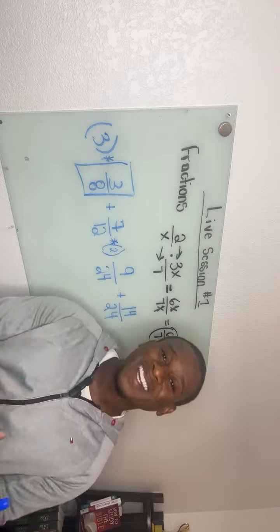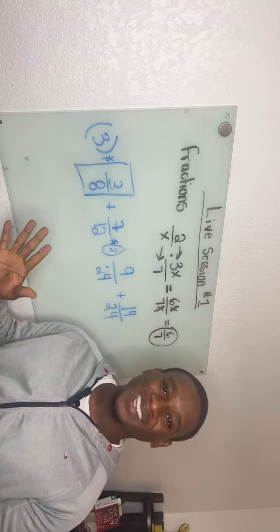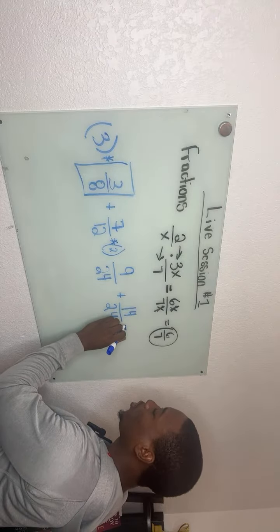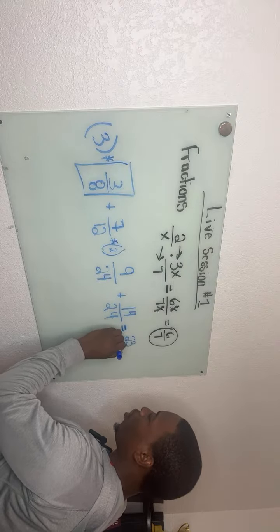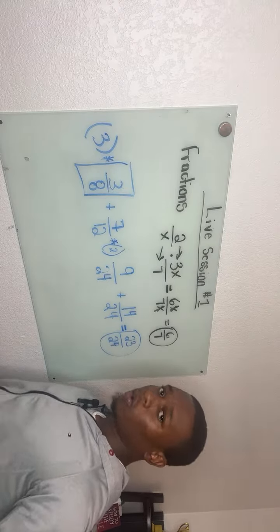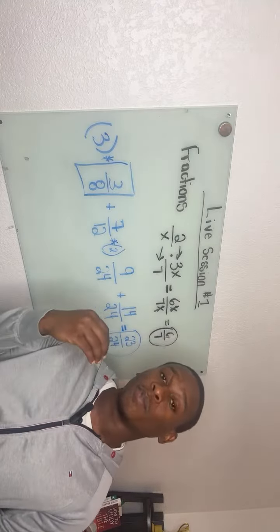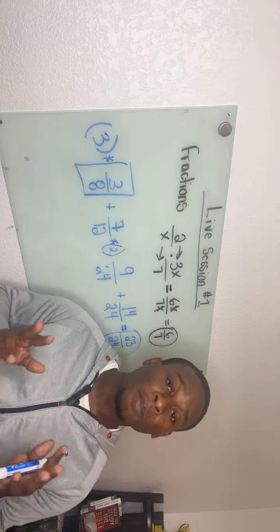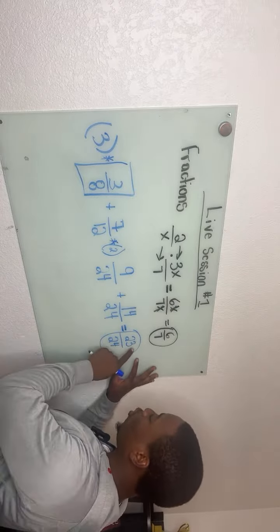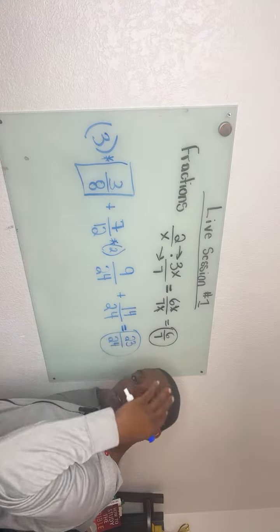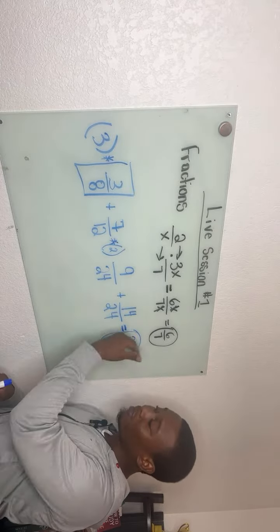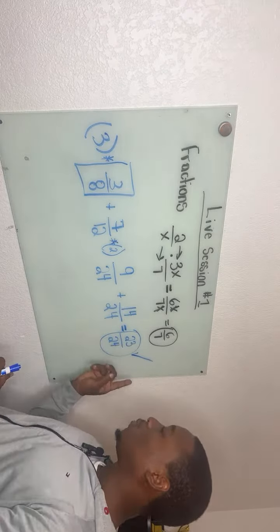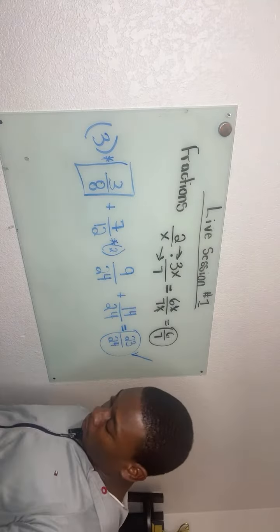Now the magic is coming together — we have the same denominator, so we are able to actually add. When I add these two together I'm going to get 23 over 24. A rule of thumb: always look to simplify if you can. But when we look at this problem, 23 and 24 share no common divisor to make it smaller, so we're going to leave that as our final answer.